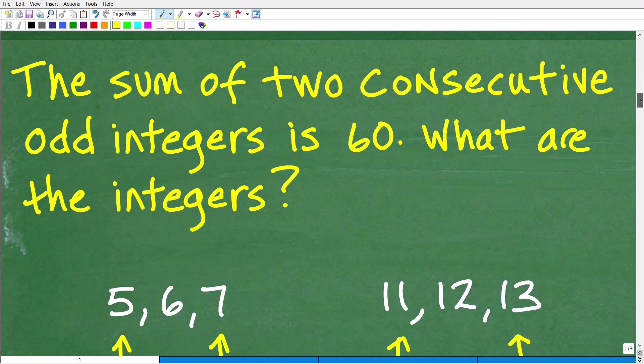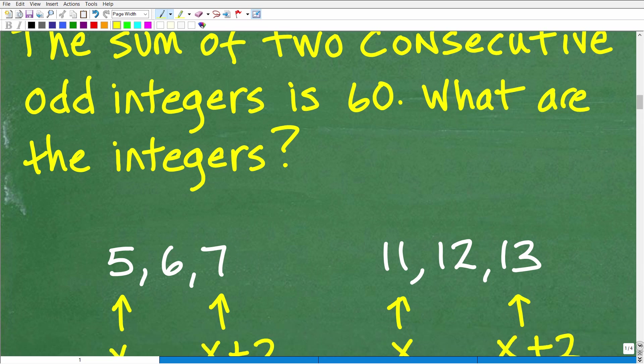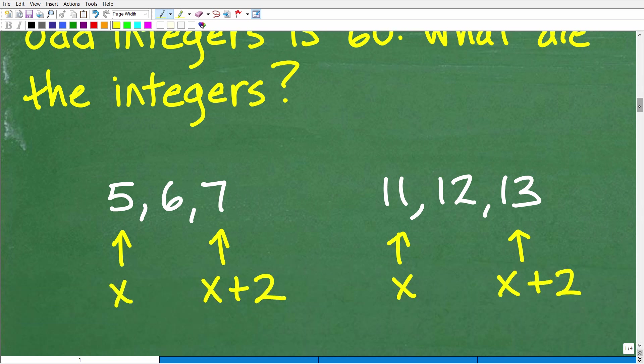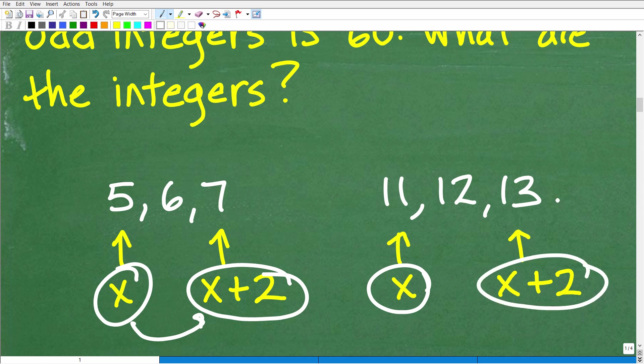And so what we're going to do now is establish a variable. So we hopefully understand the pattern here. We're looking for two consecutive odd integers. So if we let our first integer be X, X represents an unknown value. If X is our first odd integer, then X plus two will be our next integer, our consecutive odd integer.